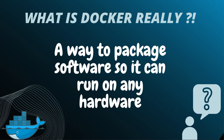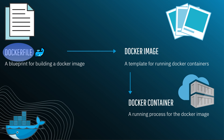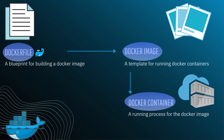So what is Docker really? Practically speaking, it's just a way to package software so it can run on any hardware. Now in order to understand how that process actually works, there are three things you must be aware of: Dockerfile, Docker image, and Docker container. A Dockerfile is just a blueprint for building a Docker image. A Docker image is a template for running Docker containers. And a Docker container is just a running process from the Docker image.